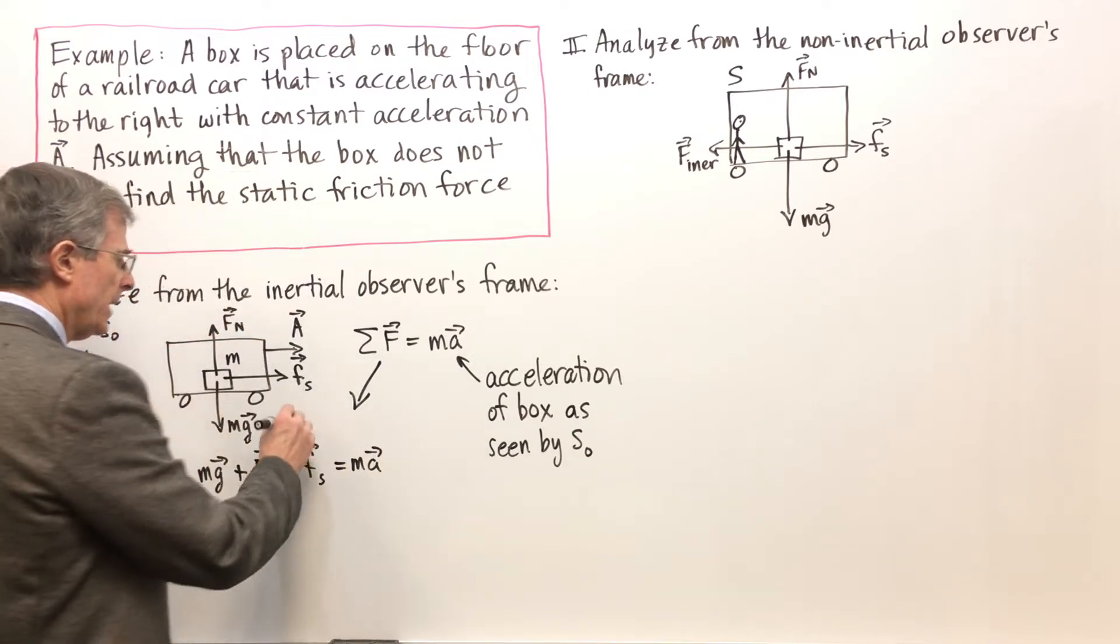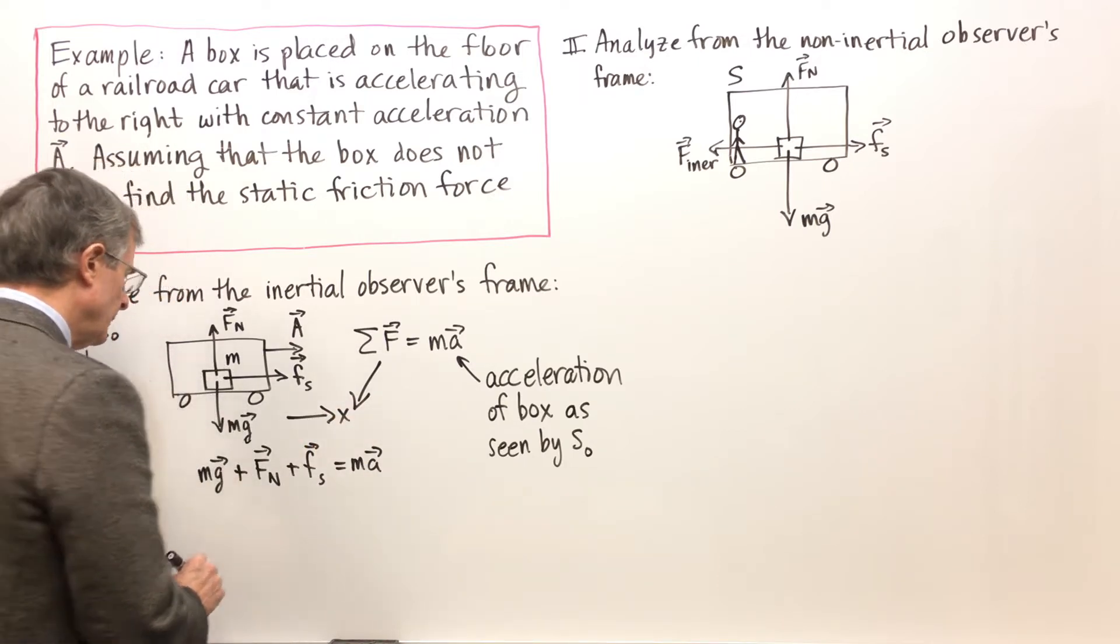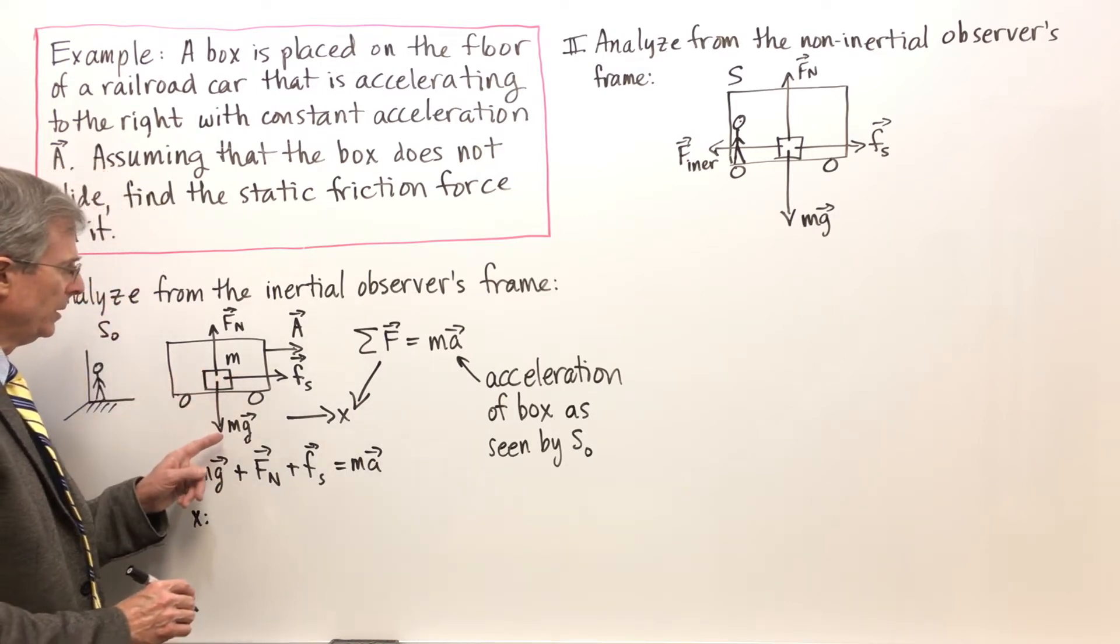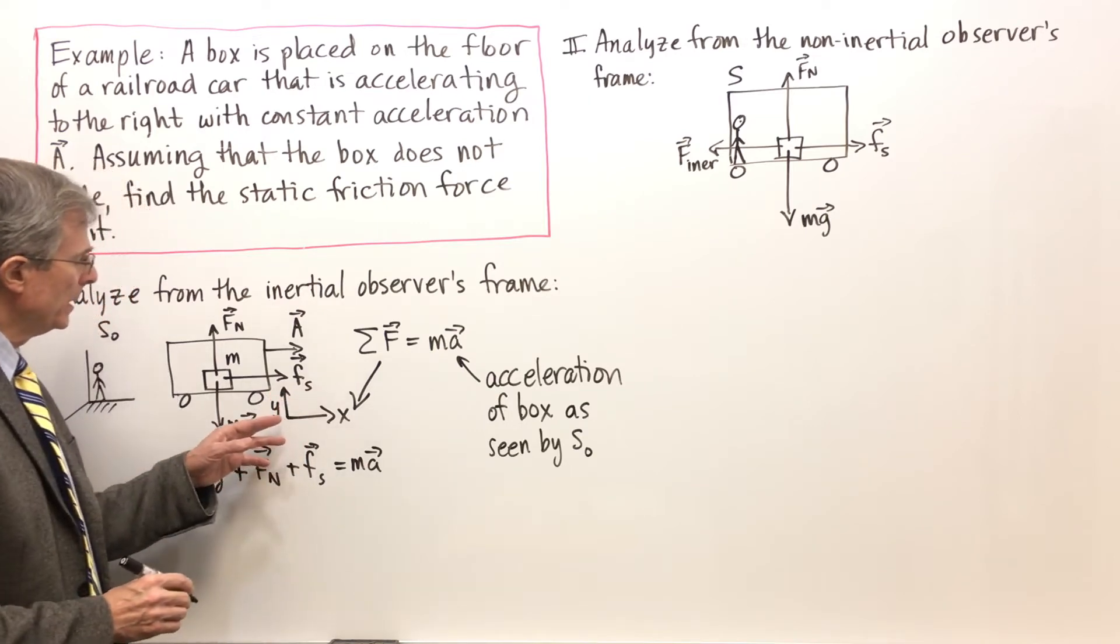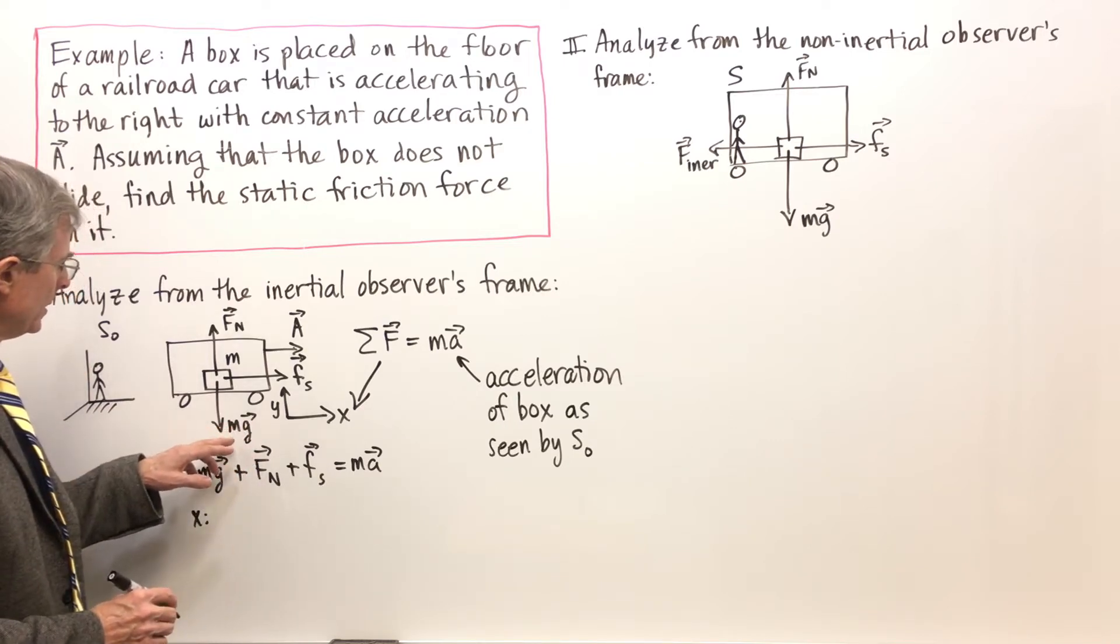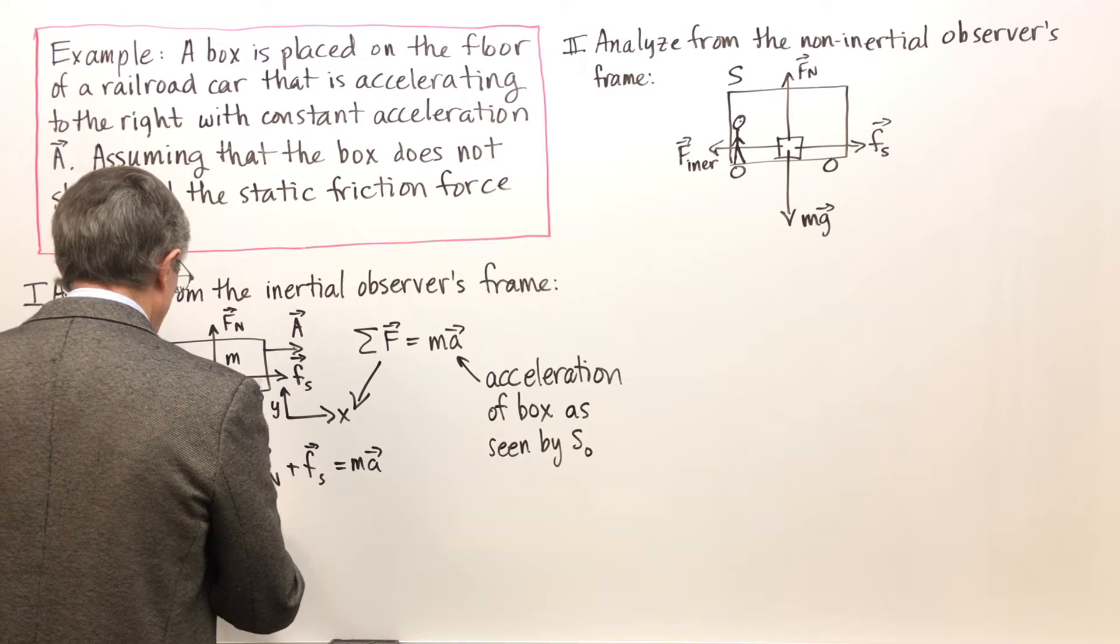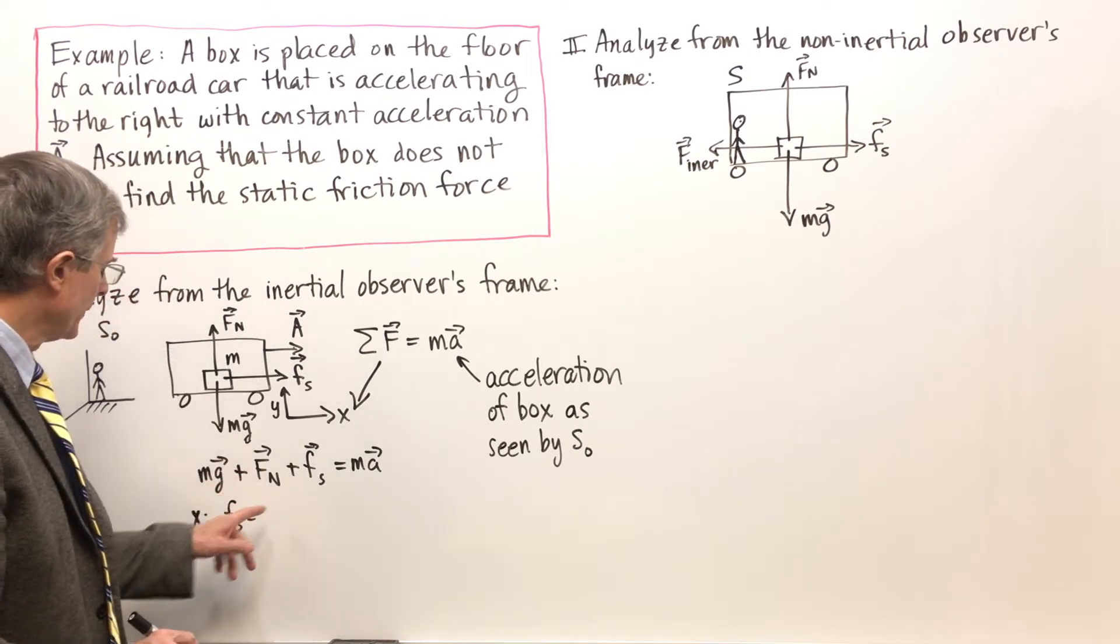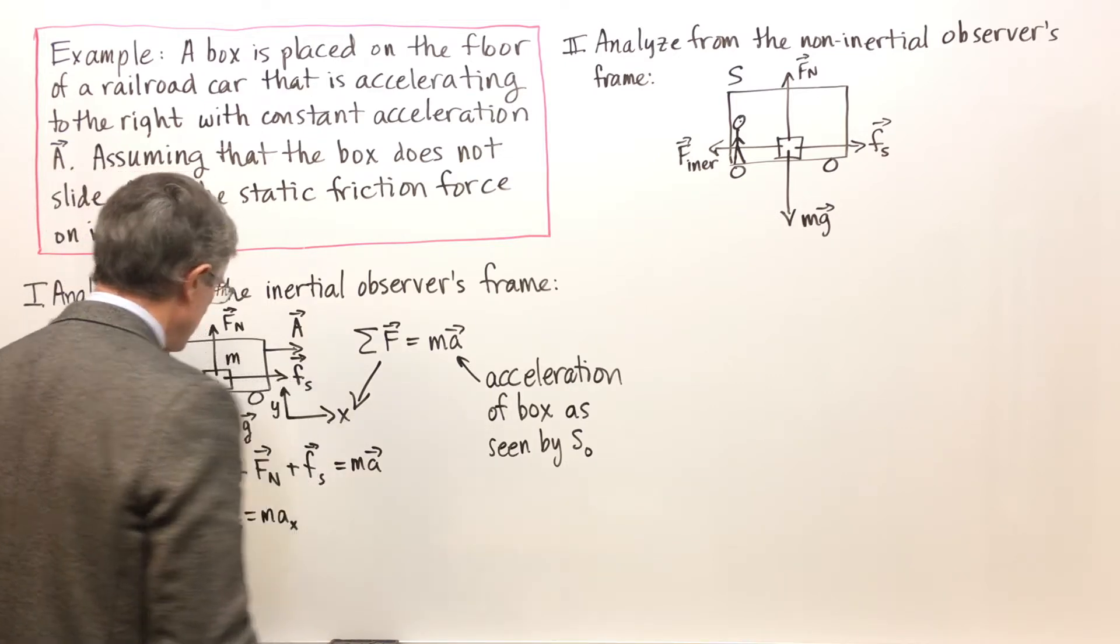And we can take the x component. Let's just say this is the x direction. In the x direction, the forces would be, well that's x and this is y. Then as seen by this observer, there'll be only one force in the x direction. It'll be f_s equals mass times acceleration in the x direction.